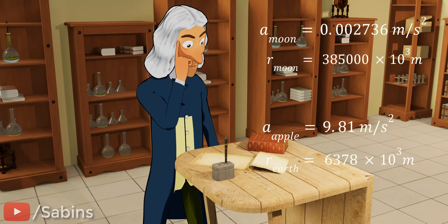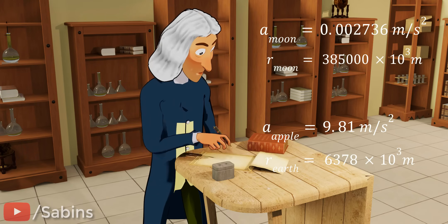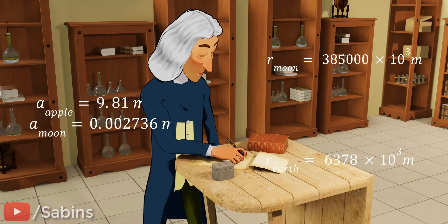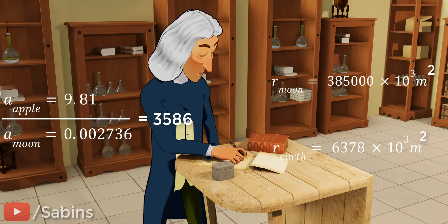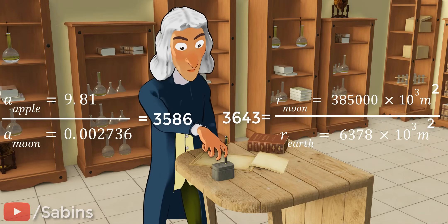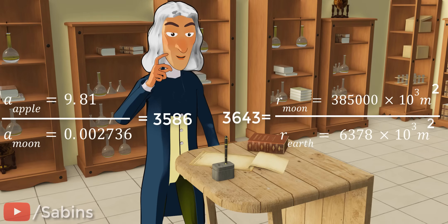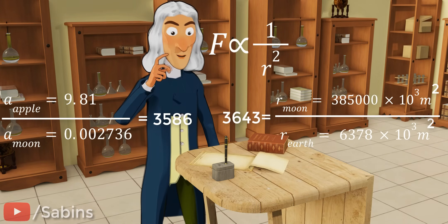If so, congratulations! Anyway, Newton was able to find out a definite connection between these four numbers. Divide the acceleration values. Now, take the square of the distances and divide. Surprise! The resultant values are very close. This means the gravitational force is inversely proportional to the square of the distance between the center of the objects. What a brilliant deduction!